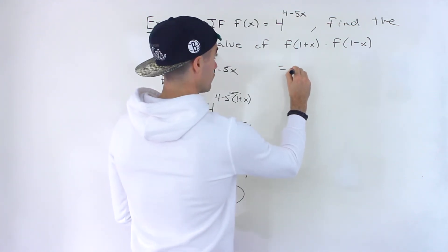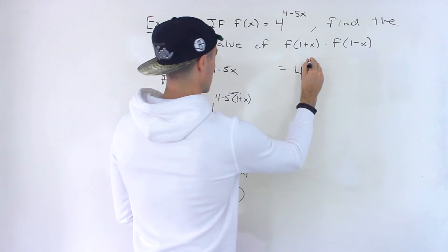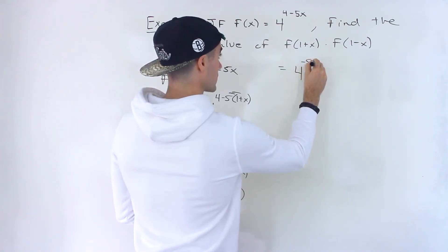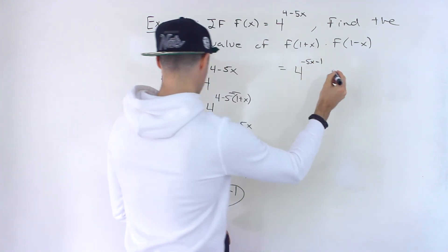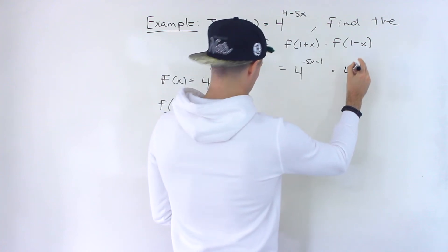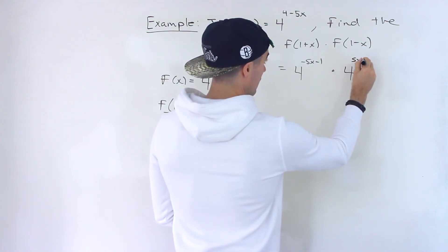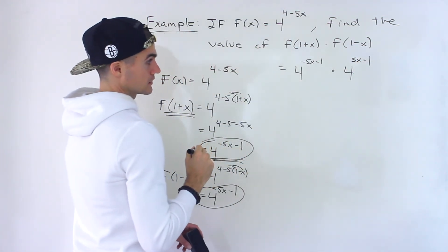Well, we'd have 4 to the power of negative 5x minus 1 times 4 to the power of 5x minus 1, like that.